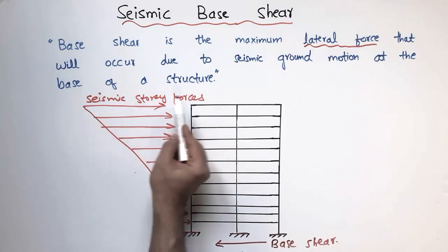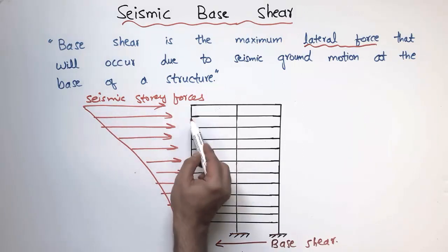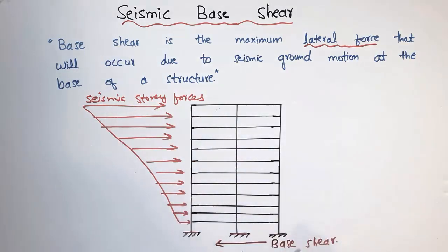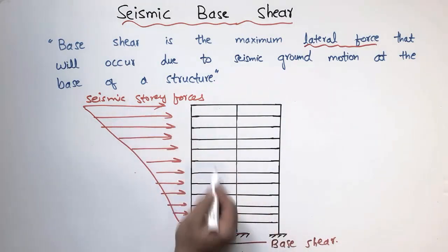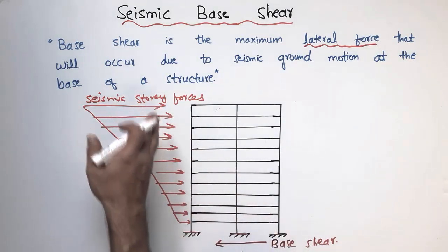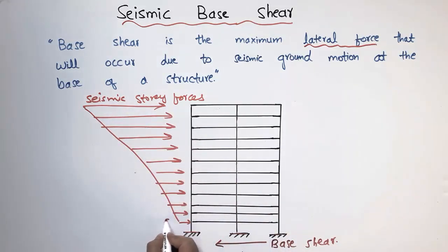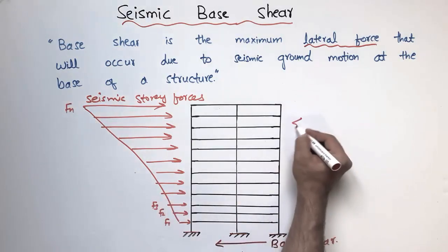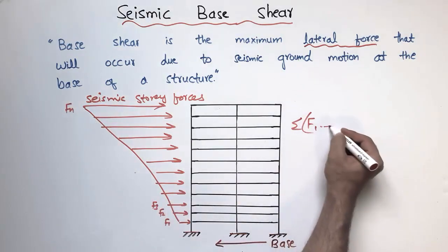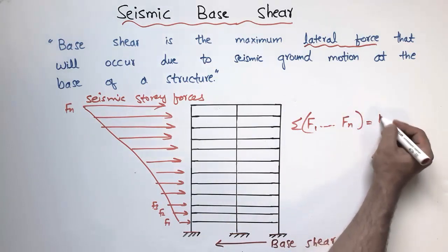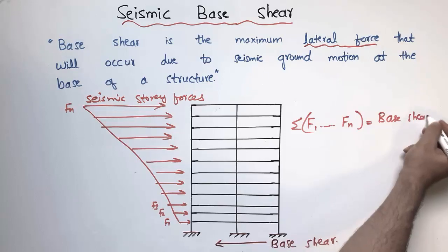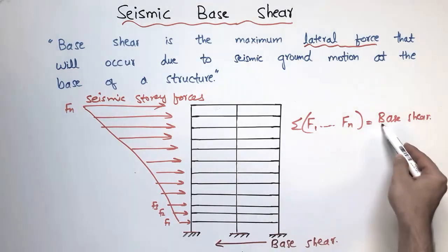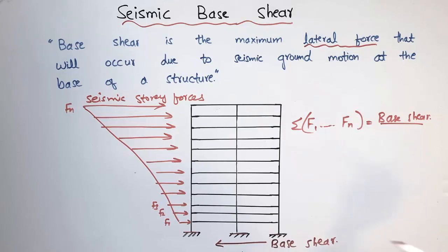Seismic story forces are the seismic forces acting on each story, on each floor of the building. The base shear is equal to the summation of all these forces acting on each floor — F1, F2, F3, and so on up to Fn. So the base shear is basically the lateral force from the earthquake distributed along the height of the building.